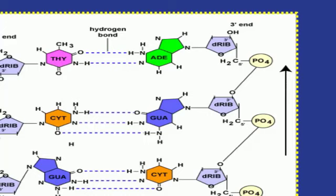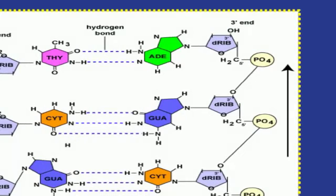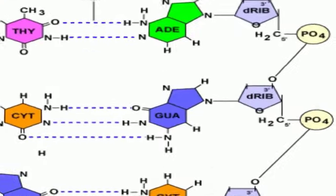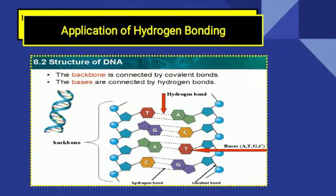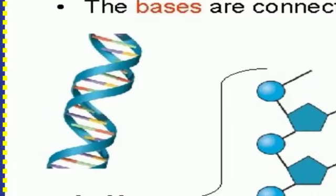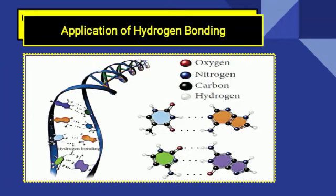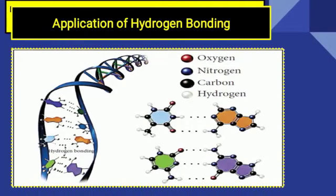Ab actually students, nitrogenous bases ki chemical composition mein nitrogen aur oxygen bhi paye jate hain, aur hydrogen to har ek base ke andar hai. Natije ke tor par yeh nitrogenous bases aapas mein hydrogen bonding banate hain. Thymine aur adenine (A-T) ke darmiyan double hydrogen bonds bante hain, aur guanine aur cytosine (G-C) ke darmiyan 3 hydrogen bonds bante hain. Jiske natije mein double helix structure jo hai humare paas DNA ka woh construct hota hai. Is tarah jo basic life hai, jo aapka DNA hai — jo hereditary material ko aage transfer karta hai through chromosomes, aur chromosomes par genes locate hote hain — in tamam ki structure hydrogen bonding ki wajah se stable hoti hai.